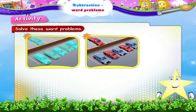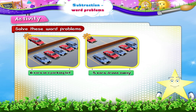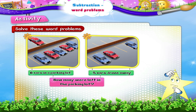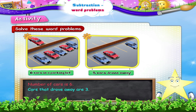There were six cars in a parking lot. Three cars drove away. How many were left in the parking lot? Number of cars is six. Cars that drove away are three. Cars left in the parking lot are six minus three, which is three.